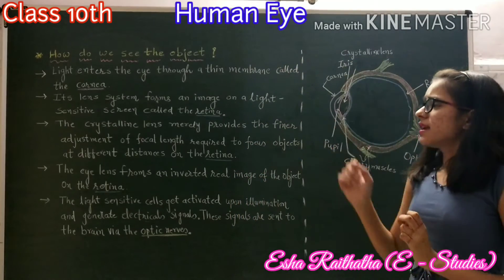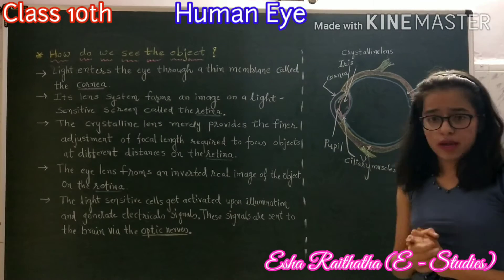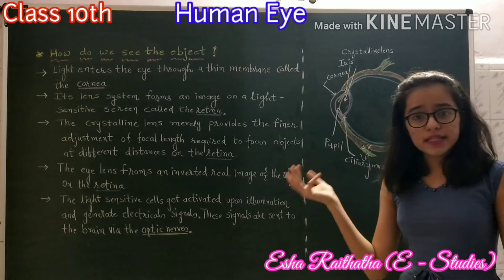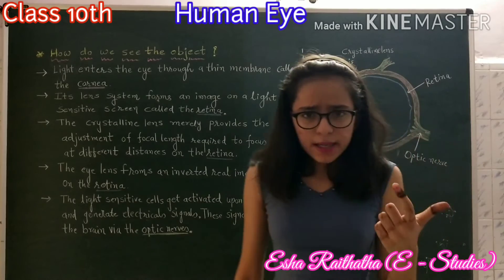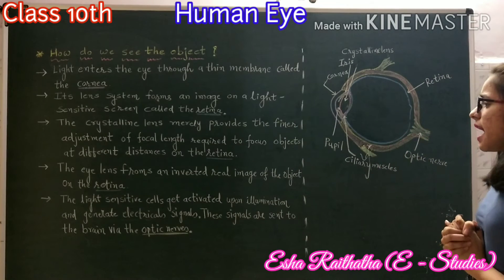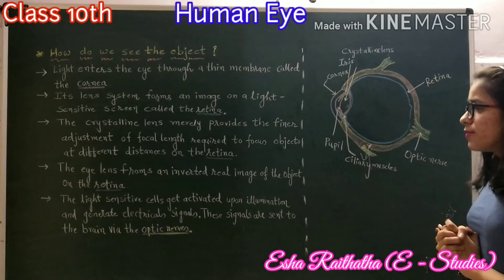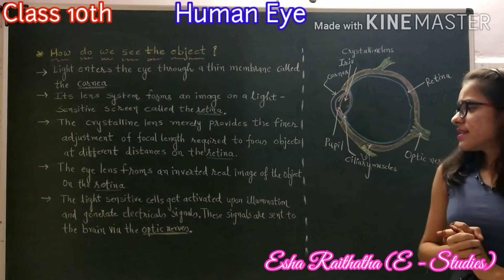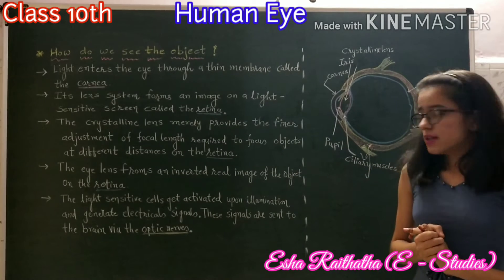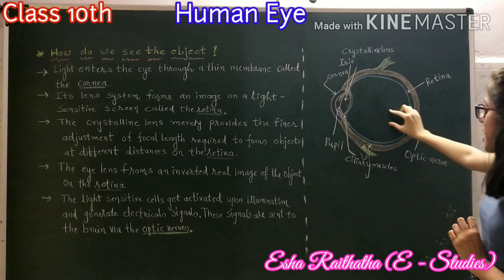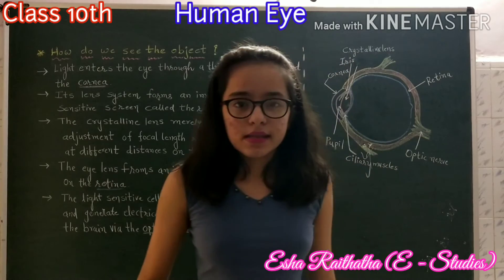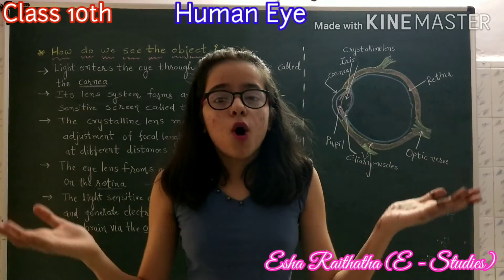The crystalline lens provides the finer adjustment of focal length required to focus objects at different distances on the retina. The retina is a delicate membrane that has an enormous number of light-sensitive cells. The eye lens forms an inverted image of the object on the retina. The light-sensitive cells get activated upon illumination and generate electrical signals, which are sent to the brain by the optic nerve. The brain processes these signals and as a result we can see objects as they are.